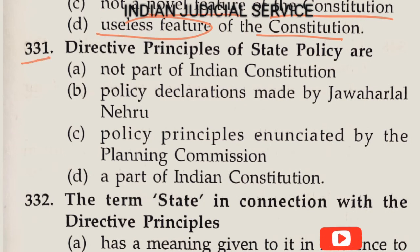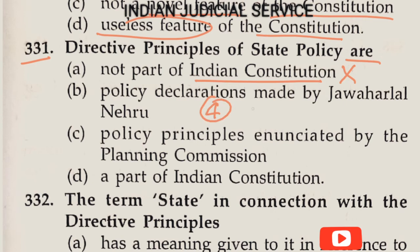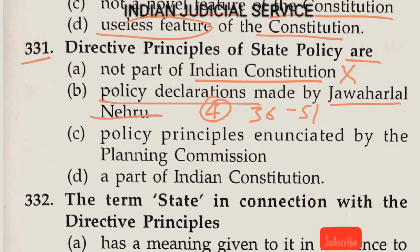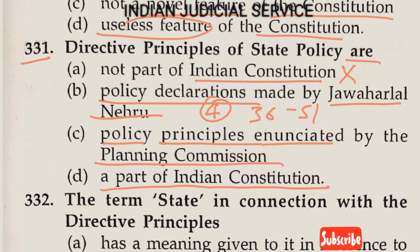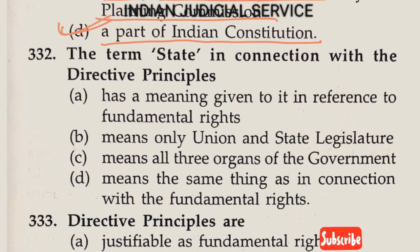Question Number 331: Directive Principles of State Policy are not a part of the constitution — this is absolutely wrong. They are part of the constitution, provided in Part 4 under Article 36 to 51. Option B: policy declaration made by Jawaharlal Nehru; Option C: principles enunciated by the Planning Commission; Option D: a part of the Indian constitution. The answer is Option D.